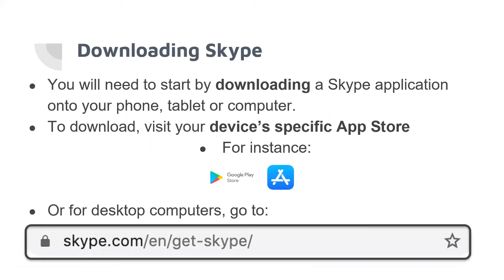To download Skype, if you are an Android user, go to the Google Play Store and you can download it from there. You will need to start by downloading the Skype application. To download, visit Skype.com/get-Skype.